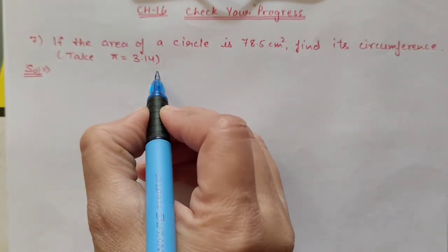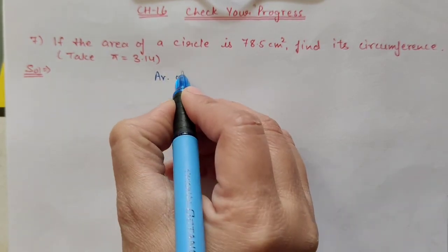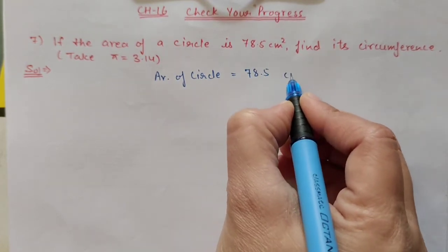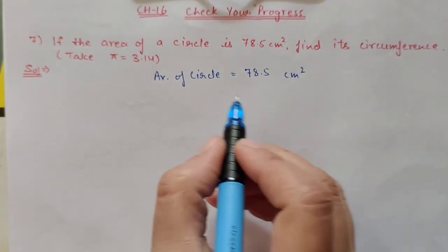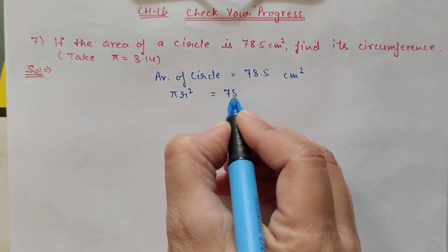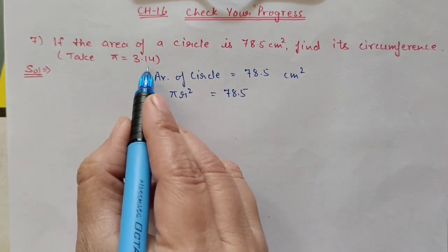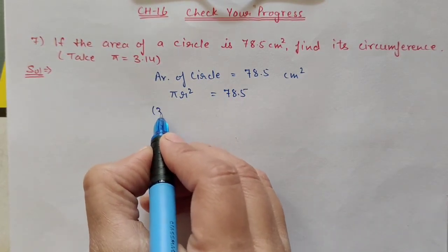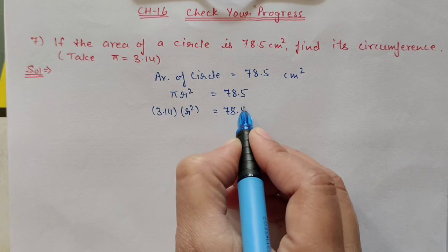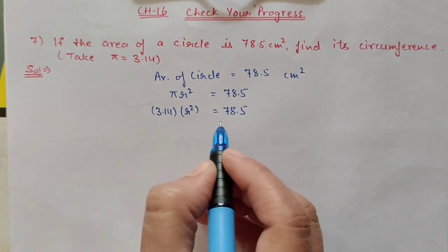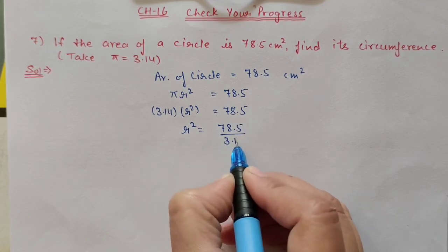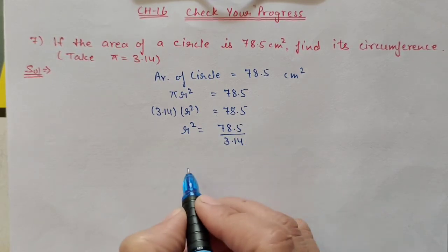We will start from the given area. Area of circle is equal to 78.5 centimeter square. The formula is pi r square, so pi r square equals 78.5. Substituting pi as 3.14, we shift it to the other side, getting 78.5 divided by 3.14.